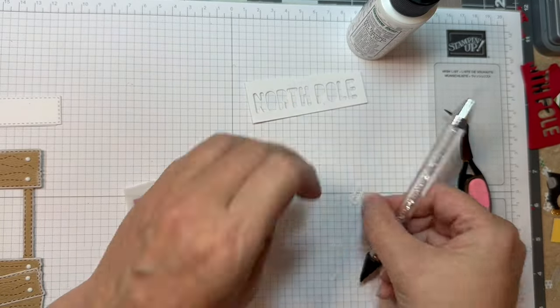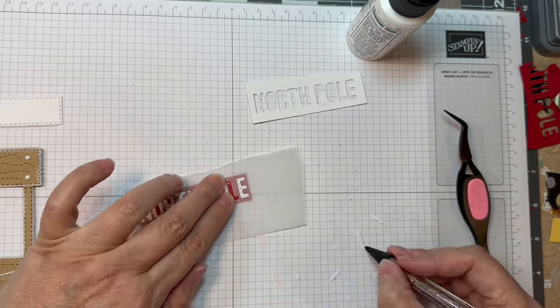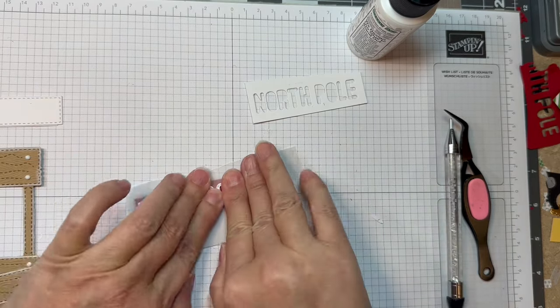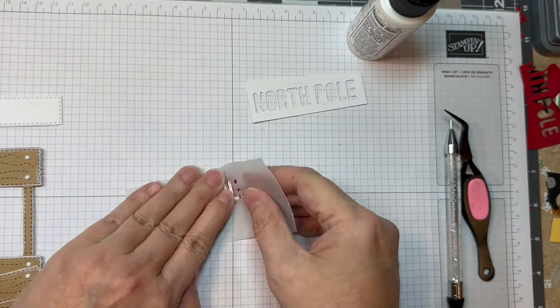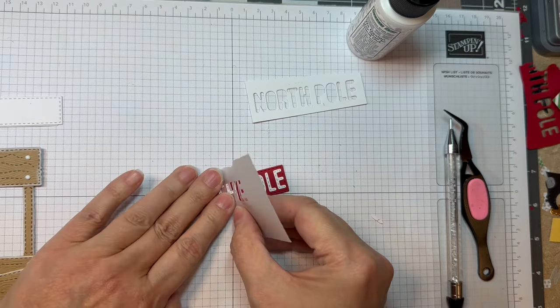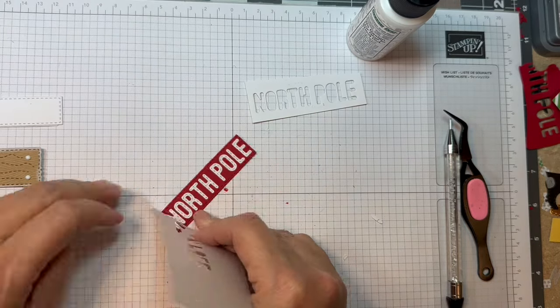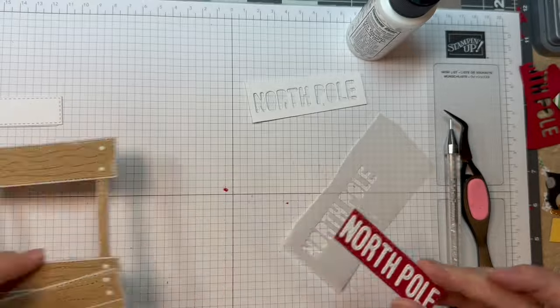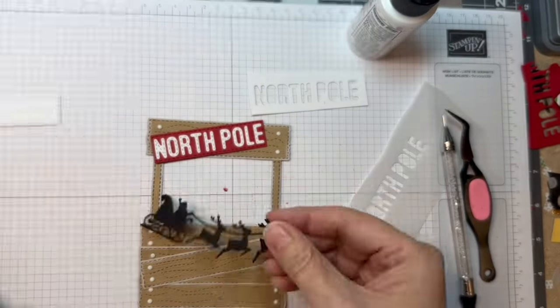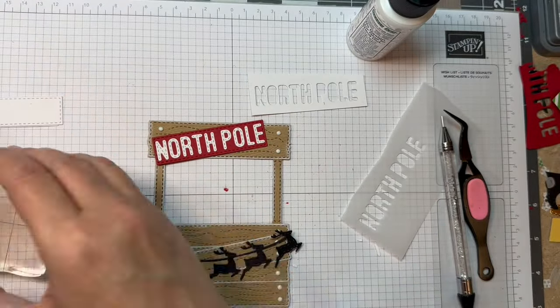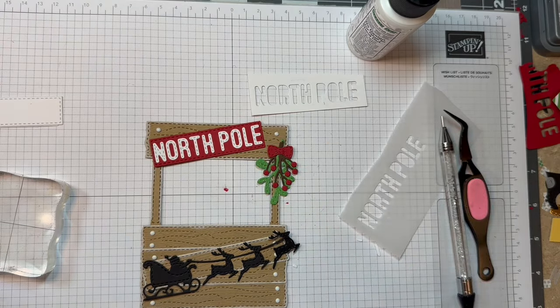You can make adorable little treats with that little treat box add-on that you can use or you can make super cute Christmas cards. I'm just going to peel off that heavyweight vellum. And now you have a North Pole sign. Isn't that cute? And now you can decorate your booths any way you'd like to decorate them.